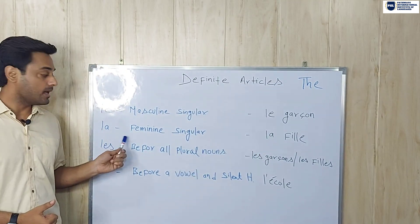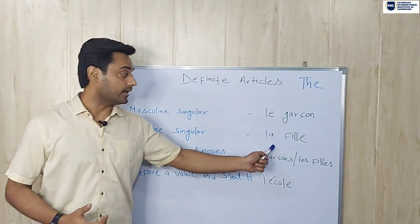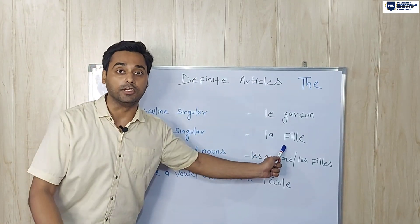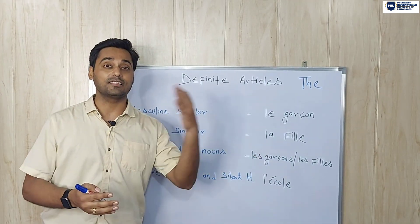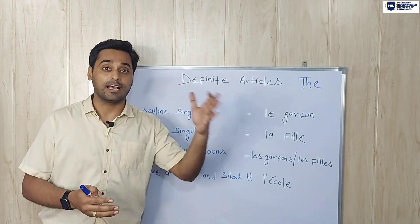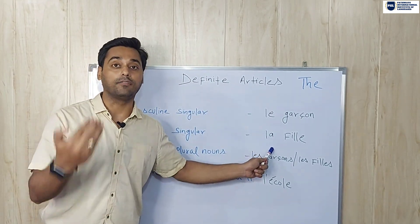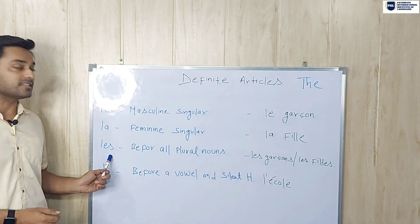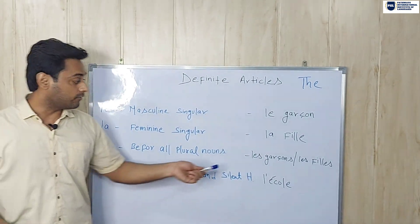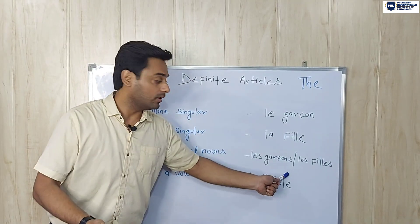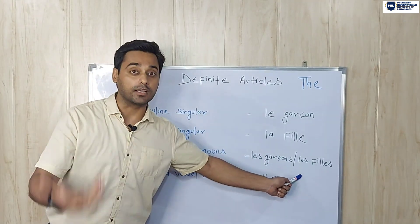We use 'la' before any feminine singular noun. For example, 'la fille' — that means 'the girl'. Fille means girl. Girl is feminine as well as singular, so we use 'la' — 'la fille'. We use 'les' before all plural nouns. For example, 'les garçons', 'les filles' — the boys and the girls. We have used 'les' here because garçons and filles are written in plural form.